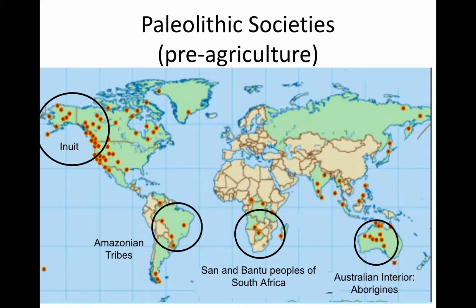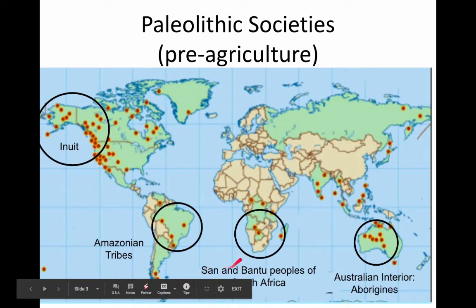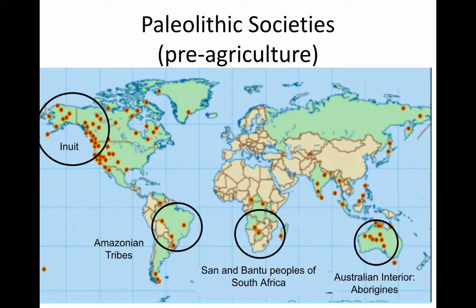This is a selection of human societies that still live very closely to how the earliest humans lived — the Inuit people up in Alaska, various Amazonian tribes, various groups in Southern Africa, and the Australian Aborigine people as well. By studying these individuals, as well as fossil records and other archaeological methods, we know a lot about early human societies before they settled in agricultural societies.